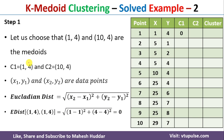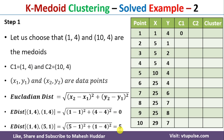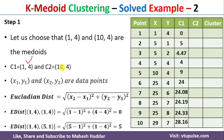Similarly, the distance from medoid (1,4) to the second data point (5,1) is 5. Using the same formula, we calculate the distance from this medoid to each of the remaining data points. Next, we find the distance from the second medoid (10,4) to all other data points as well.